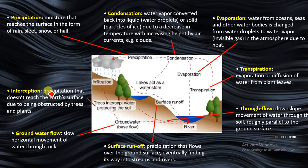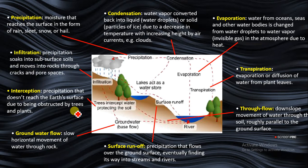Interception has to do with precipitation such as rain, sleet, snow or hail that doesn't reach the earth surface due to being obstructed by trees and plants. Lastly, infiltration has to do with precipitation that soaks into the subsurface soil and moves into rocks through cracks and pore spaces.